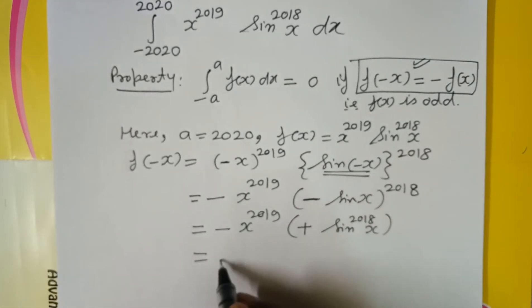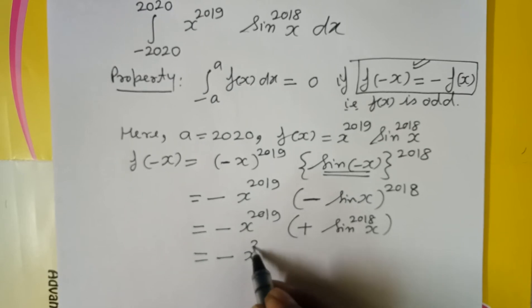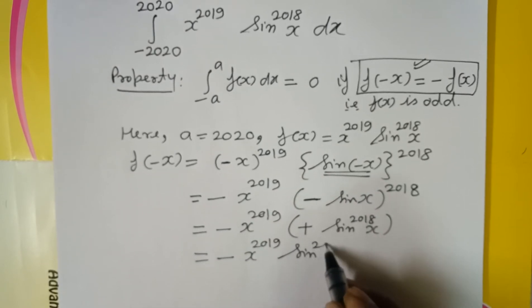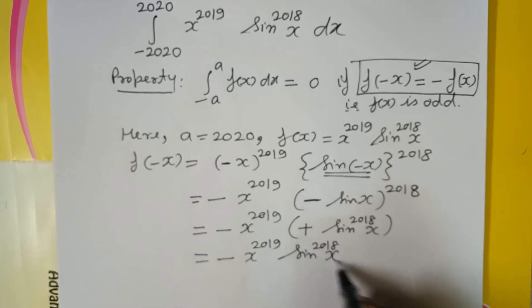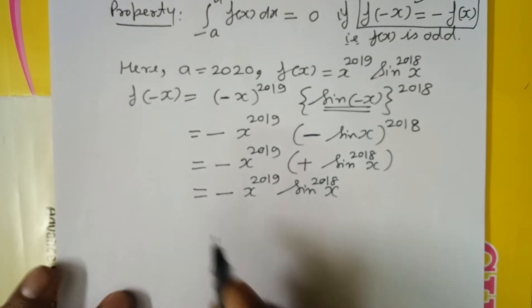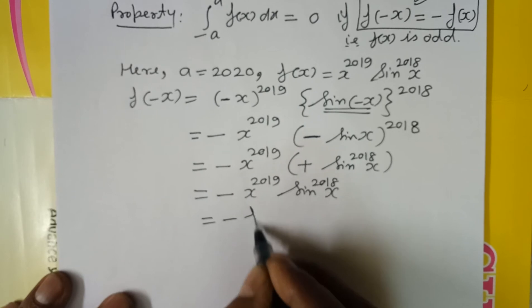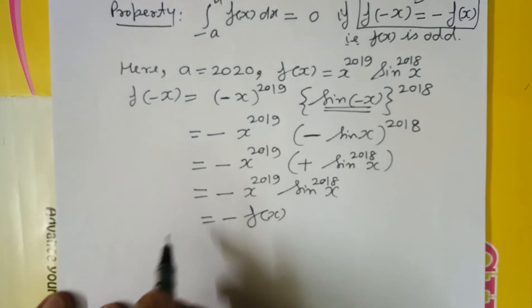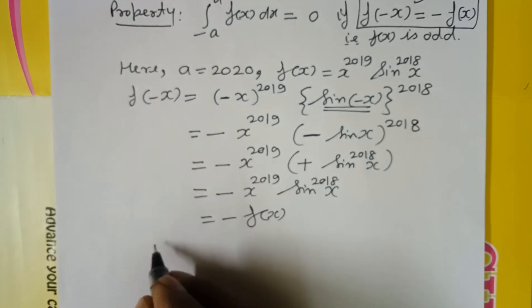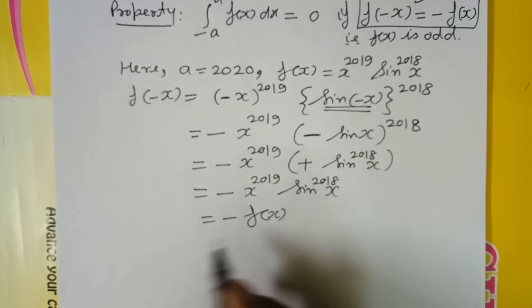Minus into plus gives minus x to the power 2019 sin to the power 2018 x, and this is minus f(x). And therefore our integral will vanish since f(x) turned out to be an odd function.